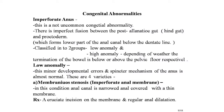The first topic is imperforate anus. This is a not uncommon congenital abnormality in which there is an imperfect fusion between the post-allantoic gut (hindgut) and the proctodeum, which forms the lower part of the anal canal below the dentate line. This abnormality can be broadly classified into low anomaly and high anomaly, depending on whether the termination of the bowel is below or above the pelvic floor respectively.